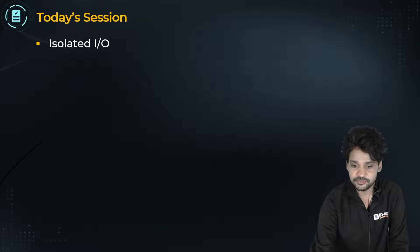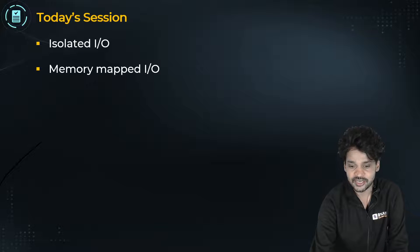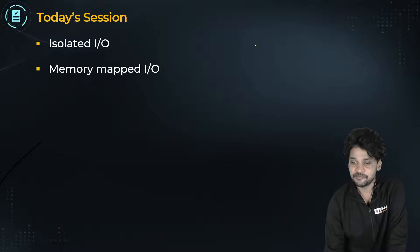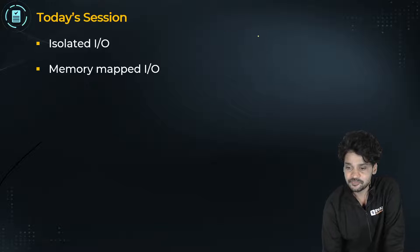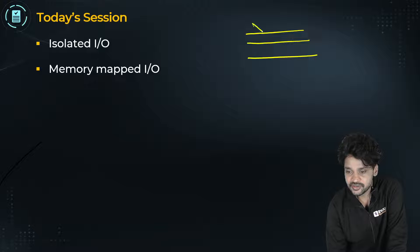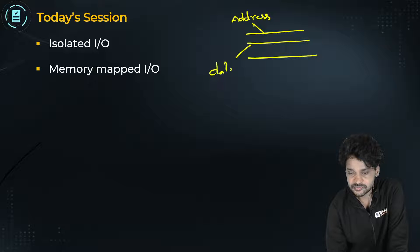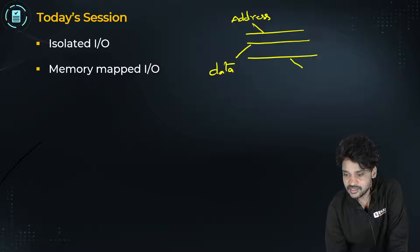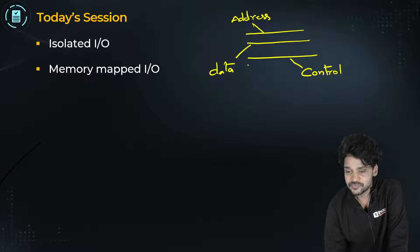In this session we're going to discuss about isolated IO and memory mapped IO. When you look at a bus system, it comprises of three things — three lines. The first one is an address bus, the second one is a data bus, and the third one is something called a control bus.